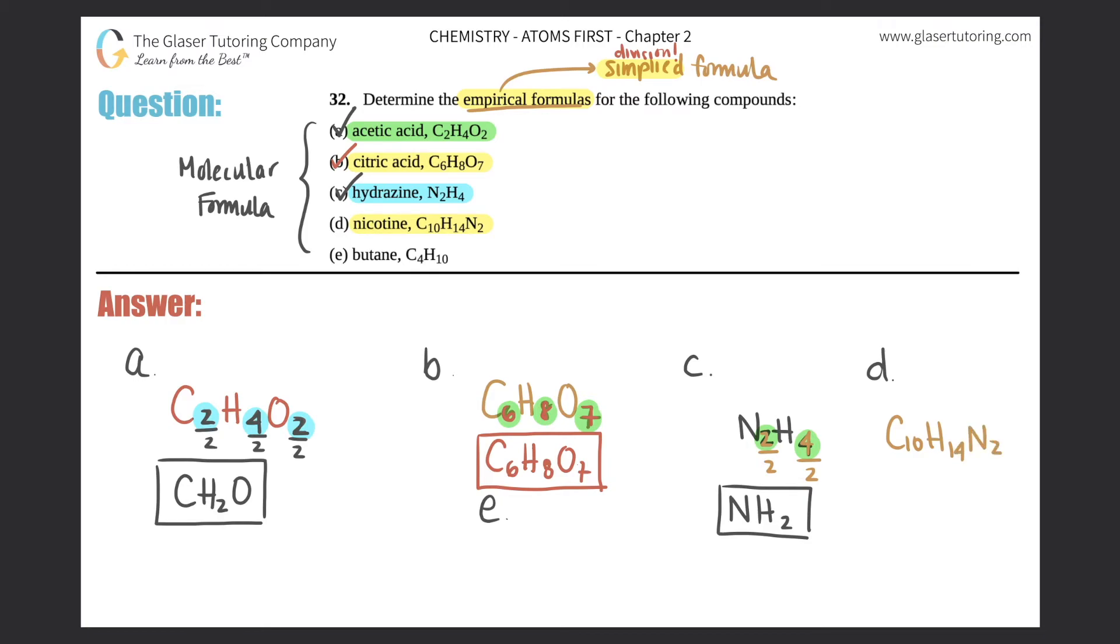Let's see, is there a common number between these subscripts? I got 10 carbons, 14 hydrogens, two nitrogens. Is there a common number between 10, 14, and two? Yeah, they're all even, so they can all be divided by two.